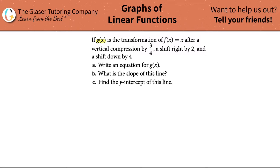If g of x is the transformation of f of x equals x after a vertical compression by 3 quarters, a shift to the right by 2, and a shift down by 4, write an equation for g of x.